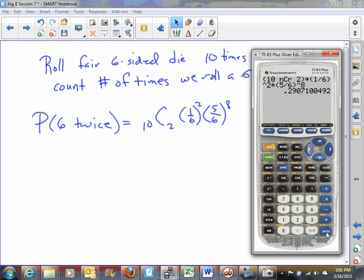We get 0.2907. So the probability that we'll roll a six twice in ten rolls is 0.2907, or approximately 0.3 if you want to round to the nearest tenth.